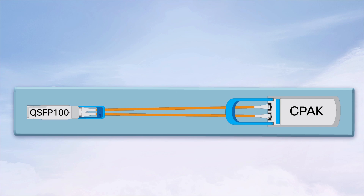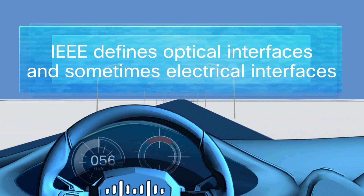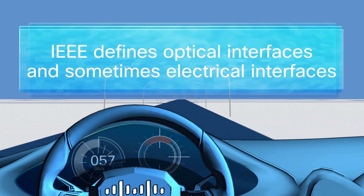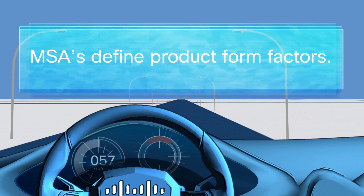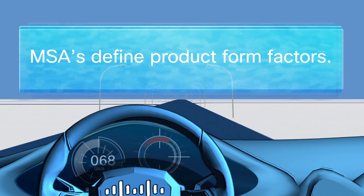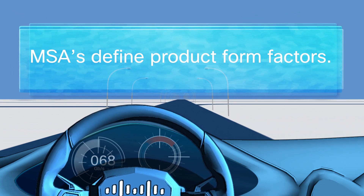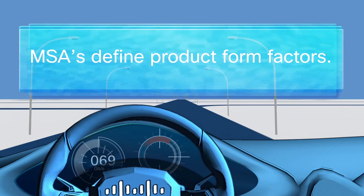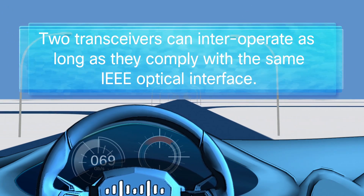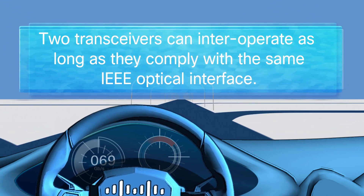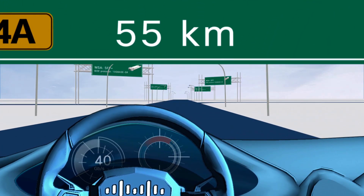Let's review the main points. IEEE defines optical interfaces and electrical interfaces. MSAs define product form factors. Two transceivers can interoperate as long as they comply with the same optical interface. Now you'll have an easier time matching transceivers with each other and their ports.